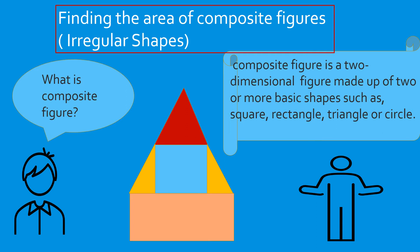Look at this figure. This is an example of a composite figure. We can divide this figure into a rectangle, two triangles here, a square here, and a triangle. So how many basic figures do we have? We have five: three triangles, a square, and a rectangle.